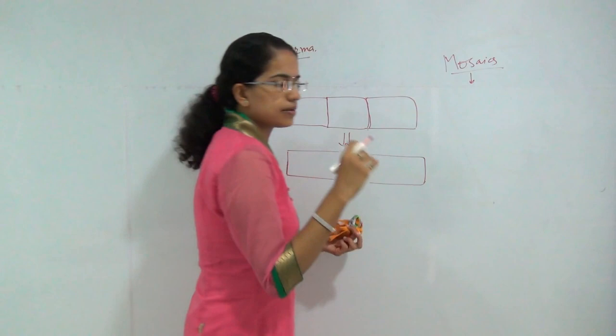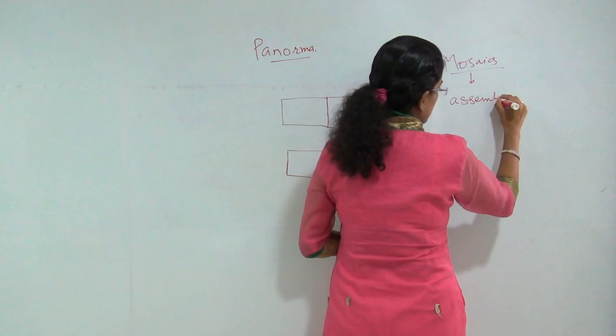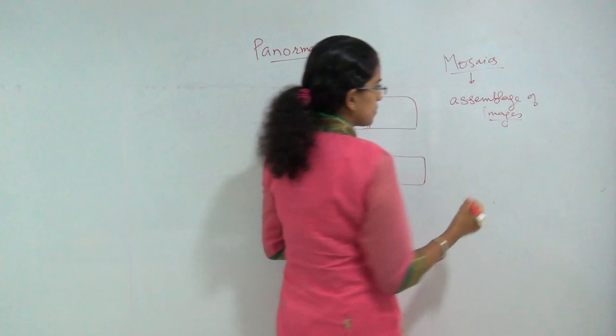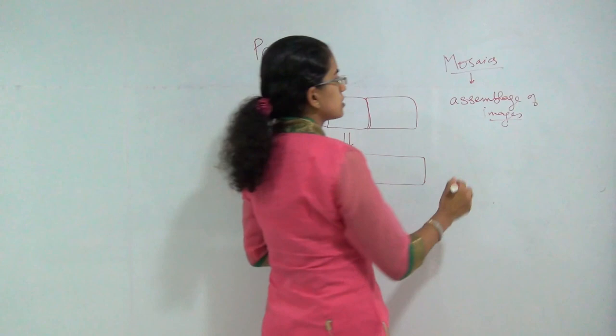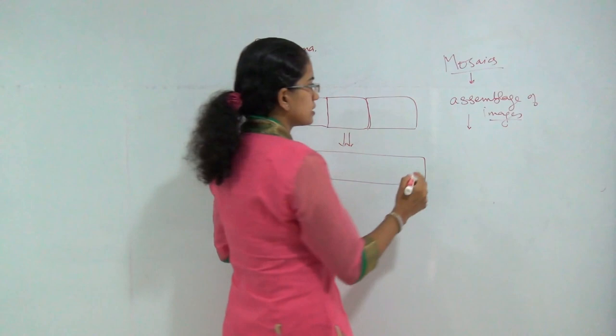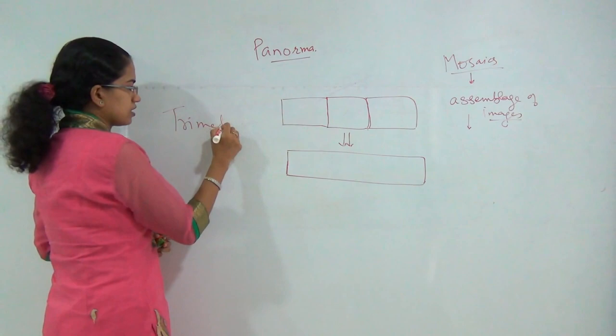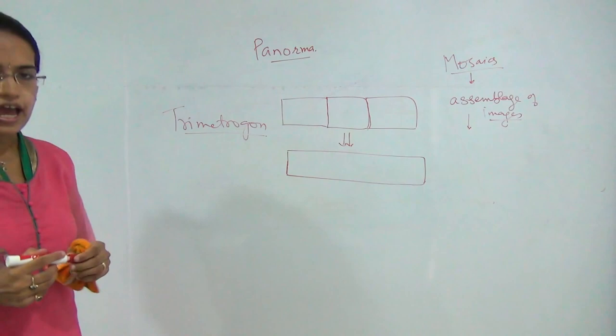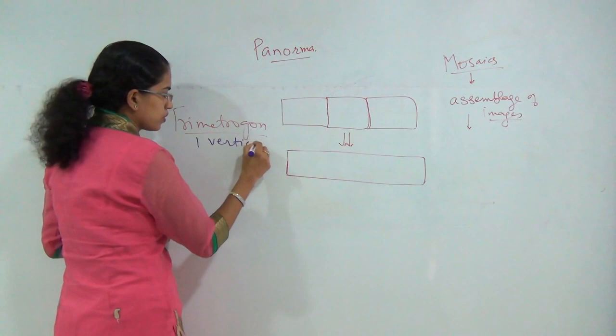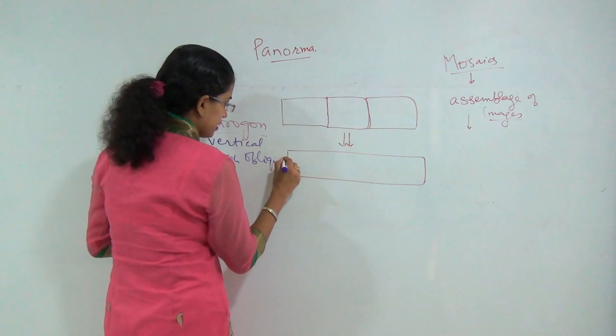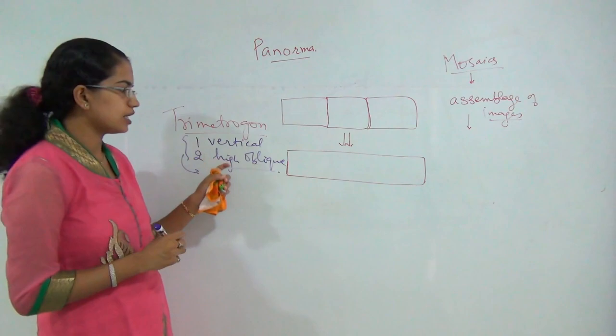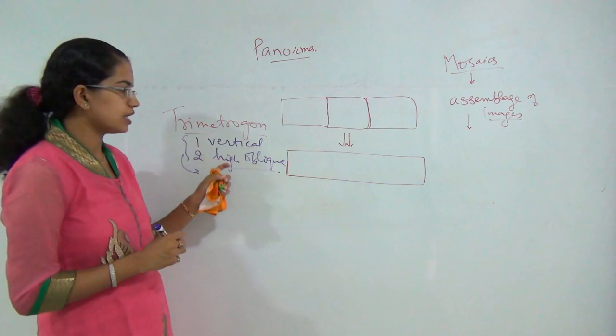The next type is mosaics — these are assemblages of overlapping images combined to generate a single photograph covering a larger area. After mosaics, there is the trimetrogon, where one vertical photograph and two high oblique photographs are combined to create a single resultant trimetrogon photograph.